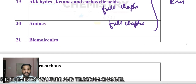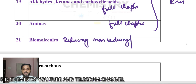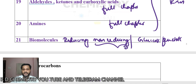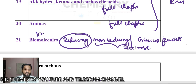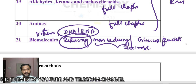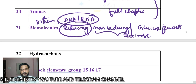Under biomolecules, study what are reducing sugars and non-reducing sugars. Learn the structures of glucose and fructose. Remember that sucrose is the only example of a non-reducing sugar — all others are reducing sugars. Study proteins — which amino acid is optically inactive. Also go through DNA and RNA, the different types of sugars, and the different types of nitrogen bases.